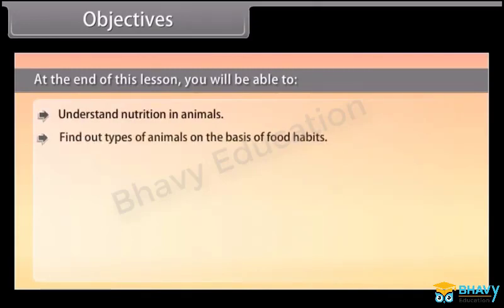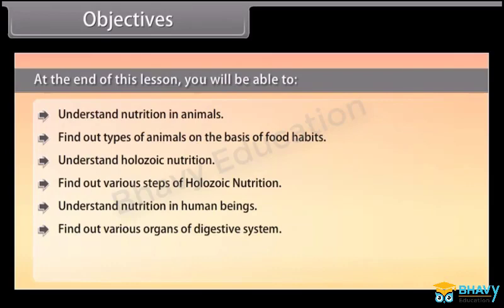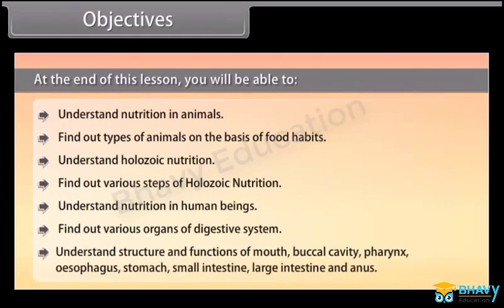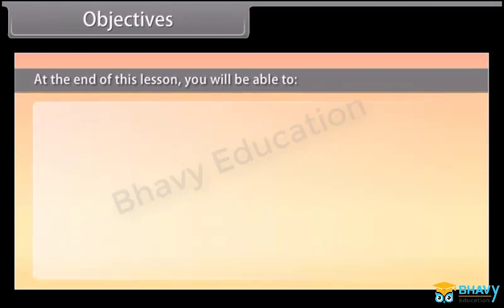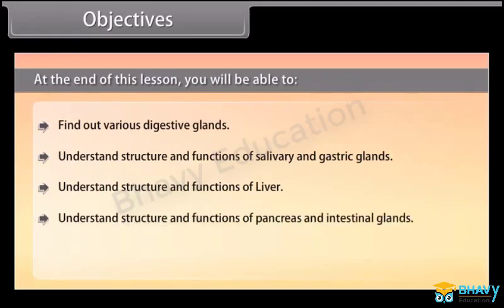At the end of this lesson, you will be able to understand nutrition in animals, find out types of animals on the basis of food habits, understand holozoic nutrition, find out various organs of the digestive system, understand structure and functions of mouth, buccal cavity, pharynx, esophagus, stomach, small intestine, large intestine, and anus, find out various digestive glands, and understand structure and functions of salivary glands, gastric glands, liver, pancreas, and intestinal glands, and study the chemistry of digestive glands.